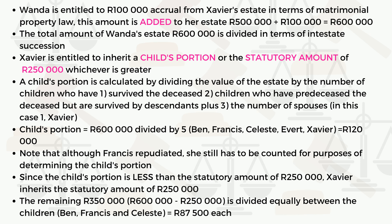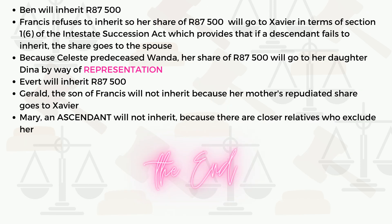The residue of 350,000 is divided equally between the children — Ben, Francis, and Celeste — giving each 87,500 rand. We'll also explain what happens with Celeste's share, as she predeceased Wanda, and what happens with Francis's repudiated inheritance.